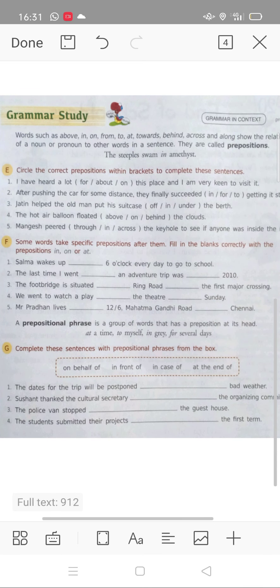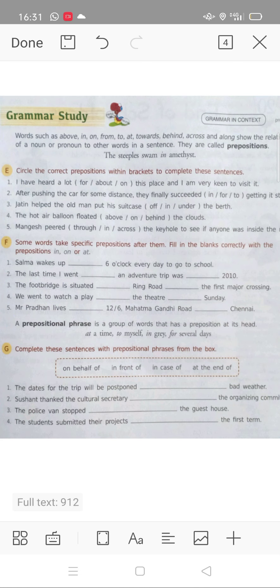Now, what do you have to do in F? In F, you have only three prepositions. You have to use these three prepositions according to your sentence. First example, see: 'Salma wakes up ___ six o'clock every day to go to school.' So now, Salma wakes up at six o'clock. Okay? So this is 'at.' In that way, whatever is correct, you have to fill in these three prepositions.